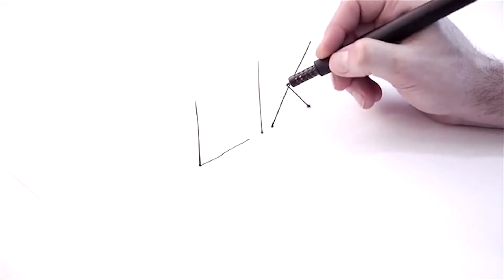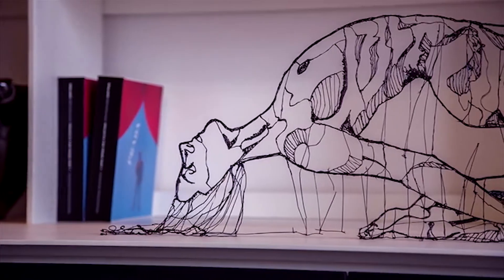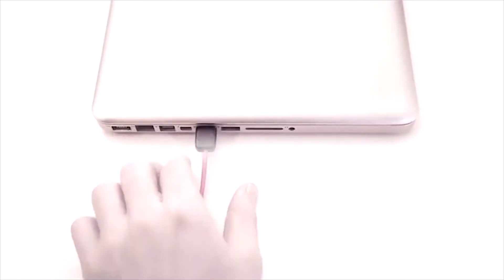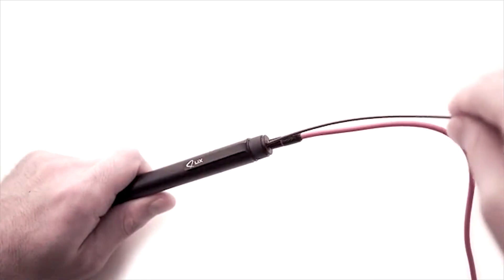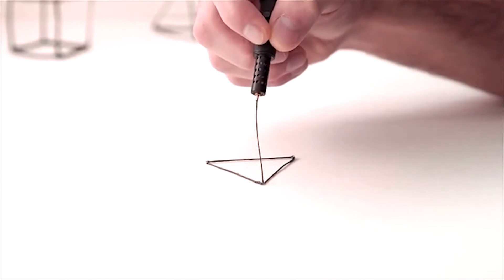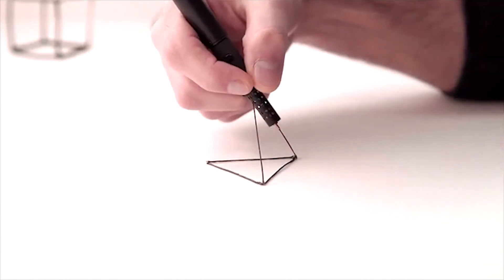Drawing in thin air appears easy with the pen, and some of the early creations from the Lix are very unique. Power comes from a USB port, and it uses a special plastic filament specially created for the pen. For $130, you can reserve one on Kickstarter, with delivery estimated at the end of summer.